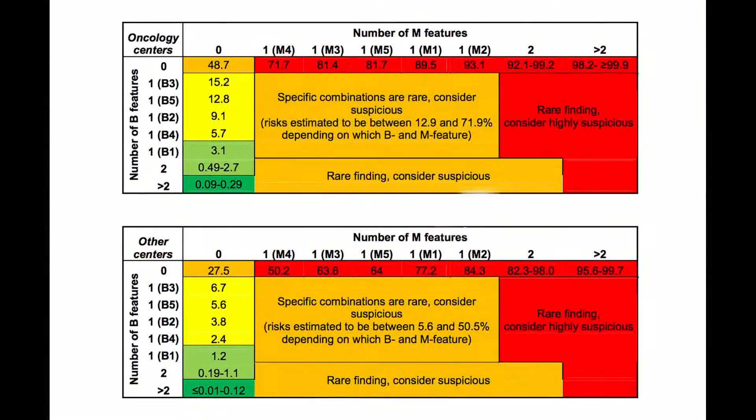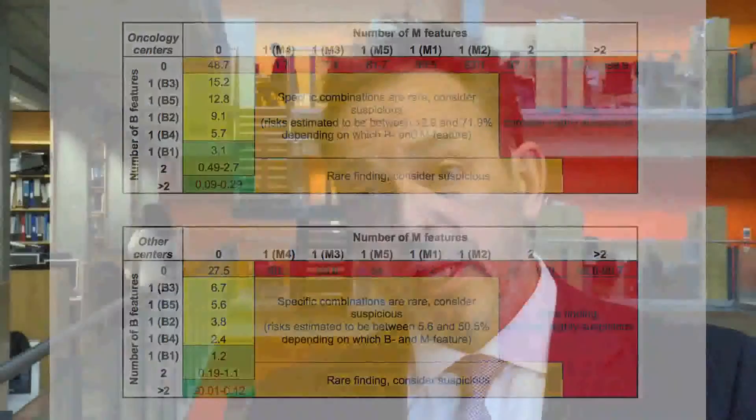What we've done with this study is look at over 5,000 ovarian cysts, and we have previously come up with a set of rules based on features which we can see on scan in ovarian cysts, to differentiate between these benign and malignant cysts.